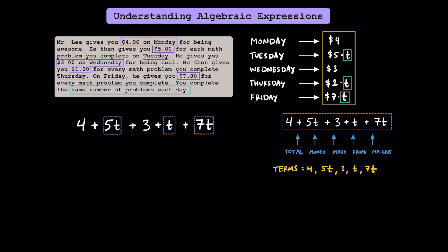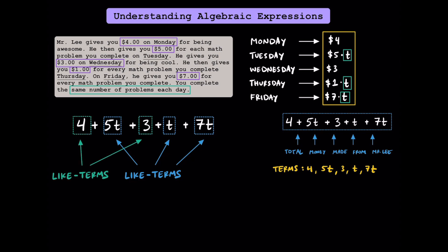Now you might have noticed that some of these terms look like each other. Terms that have the same variable and the same degree are called like terms. While it's not really important in pre-algebra, when I say degree, I just mean the exponent of the variable. For example, t and t squared would not be like terms. While 5t, t, and 7t are like terms with each other, the 4 and 3 are also like terms because they're just plain numbers. So we can say 5t, t, and 7t are like terms with each other, and separately, we can say 4 and 3 are like terms with each other.